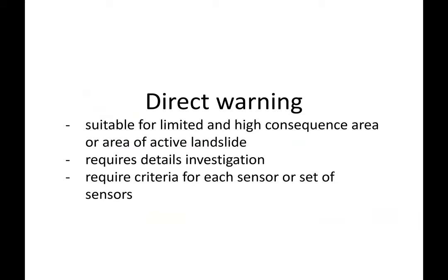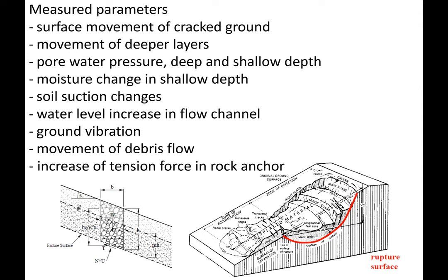What about direct warning? Direct warning means you are measuring the possibility of a landslide directly at the earth or soil itself. There are several parameters we can measure related to land movement — for example, surface movement, crack movement or crack opening, pore water pressure, moisture change, soil suction, water level increase in the flow channel, ground vibration, and so on. These parameters indicate that the soil or land has already moved or is starting to move, so measuring them directly gives you a warning.